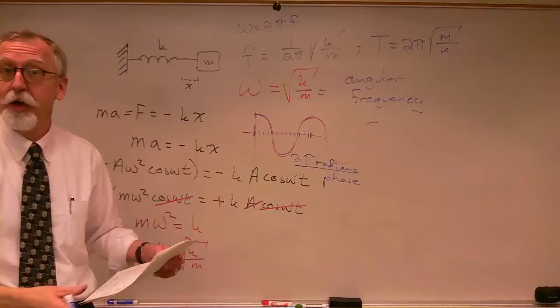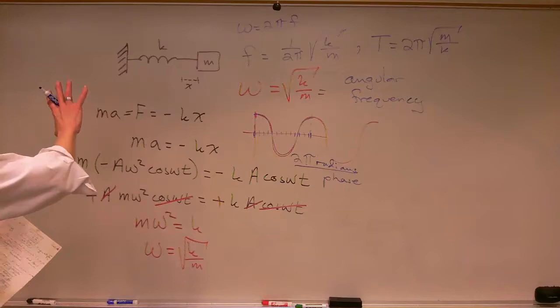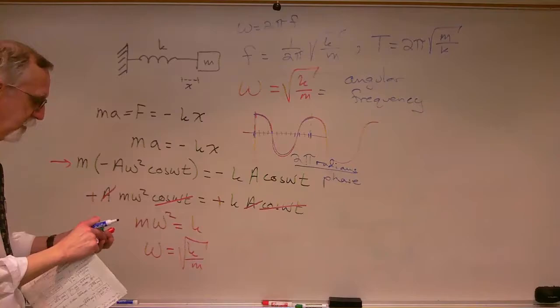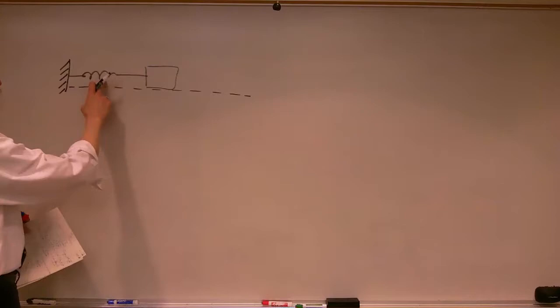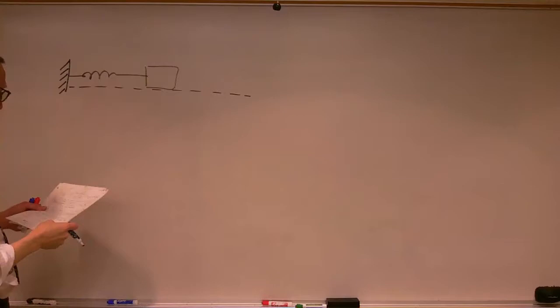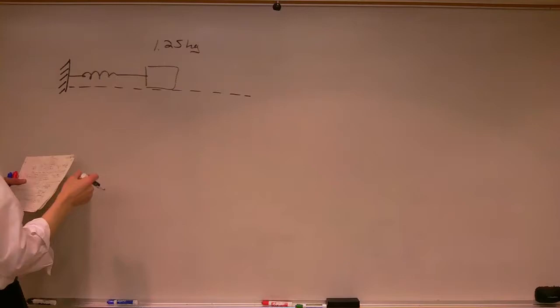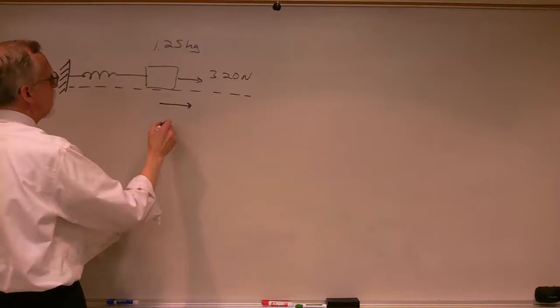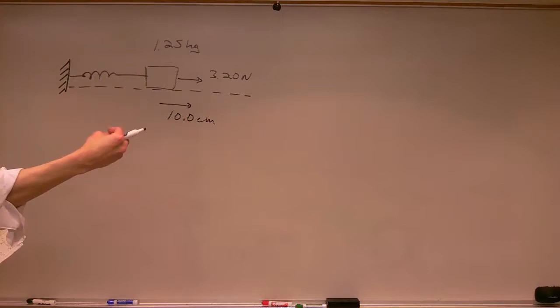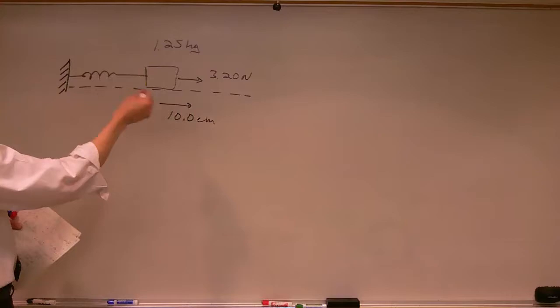So we can actually figure out what the period of the oscillation is. Let's stick some numbers in. Let's imagine we've got a mass attached to a spring, the other end attached rigidly to a wall. We have a mass of 1.25 kilograms. A force of 3.20 newtons is applied, which displaces the mass a distance of 10 centimeters. It's pulled 10 centimeters with this force and then released.